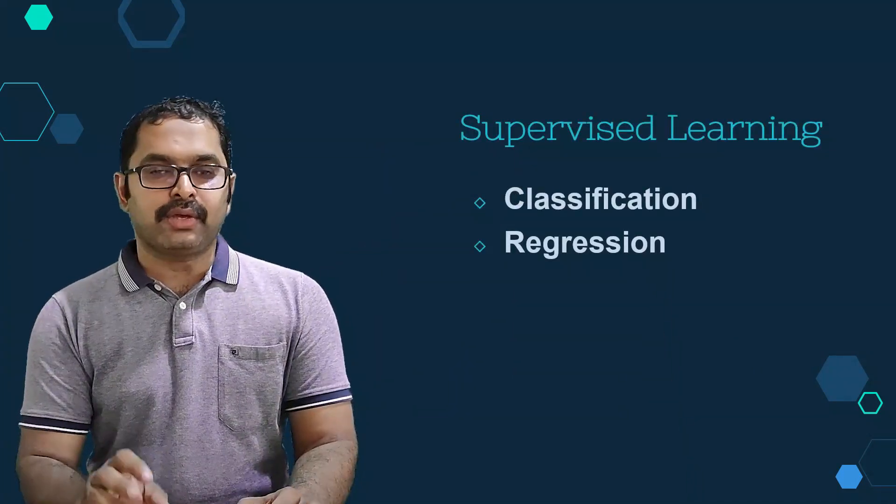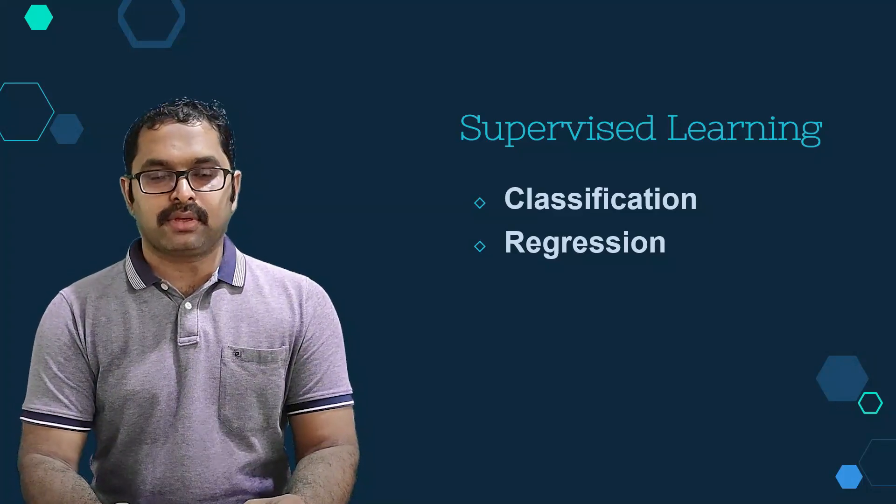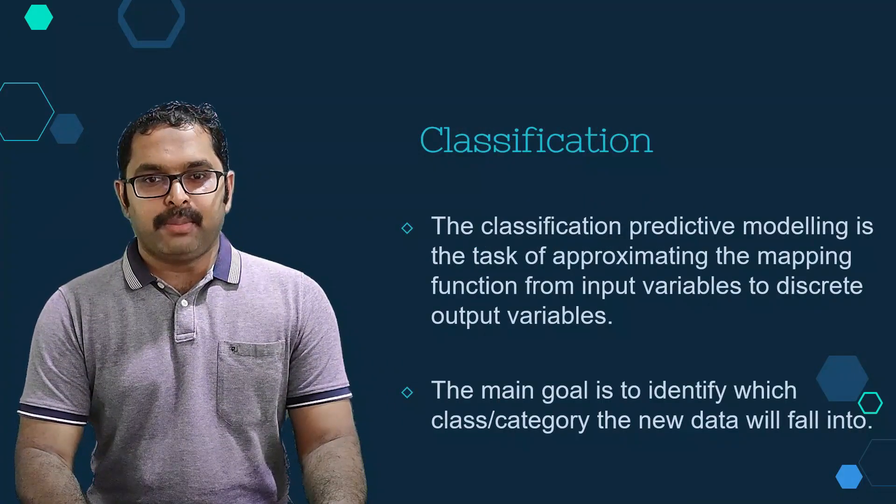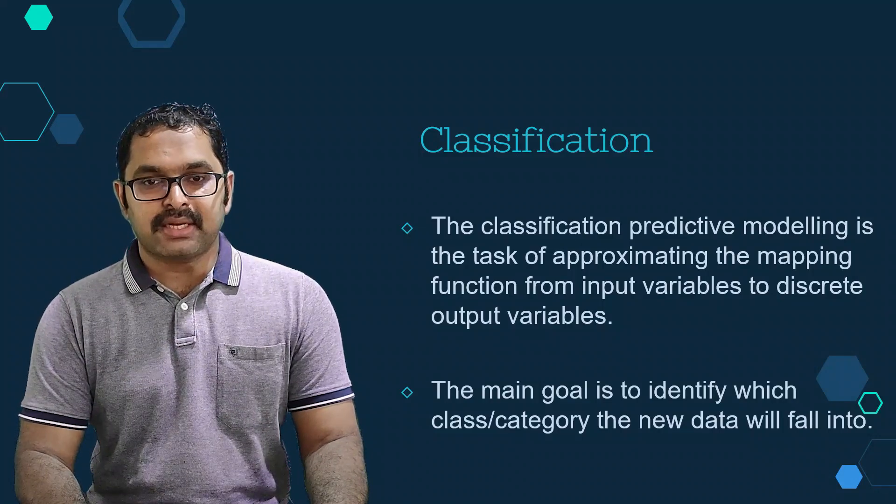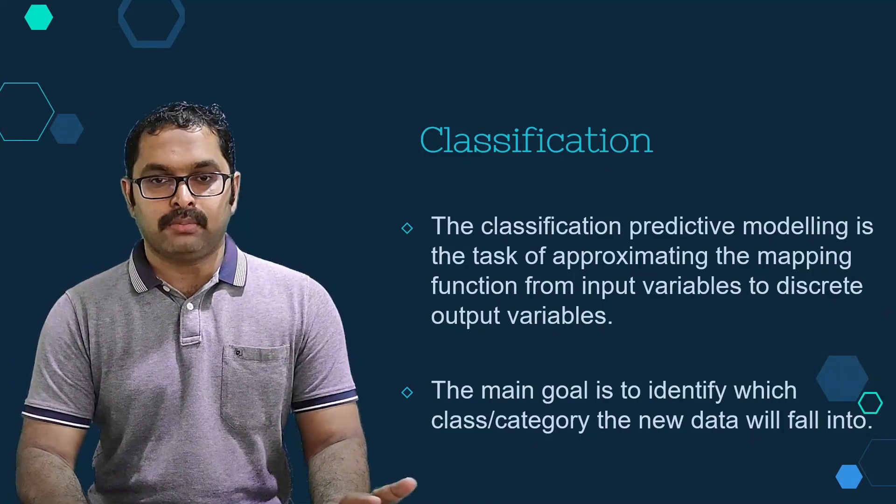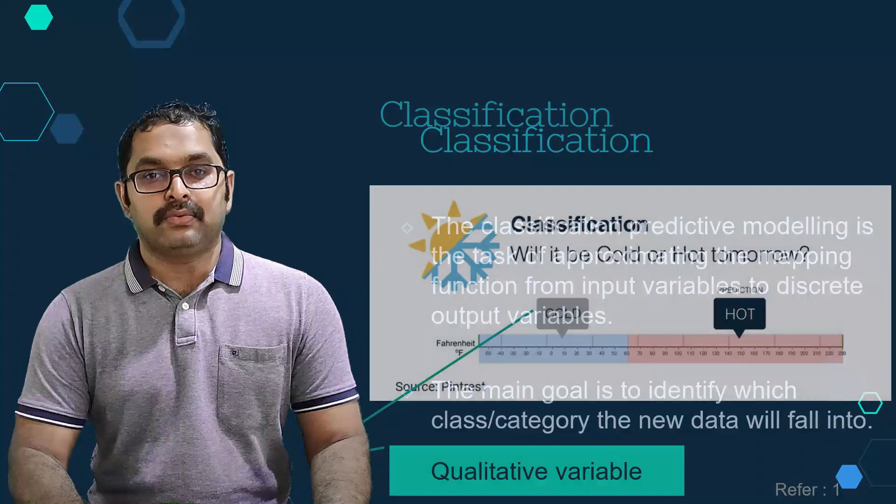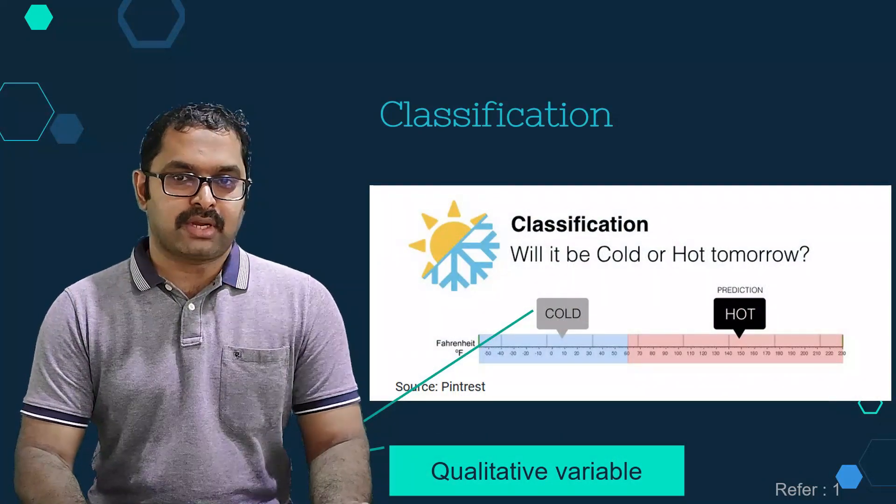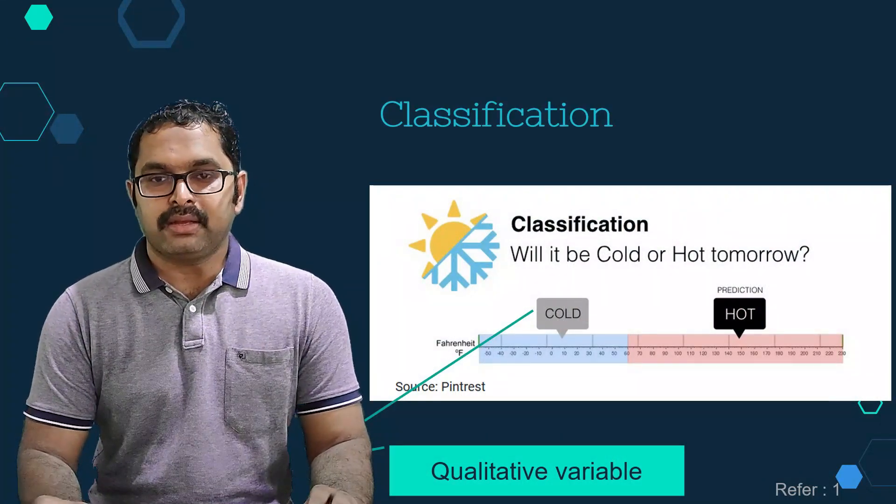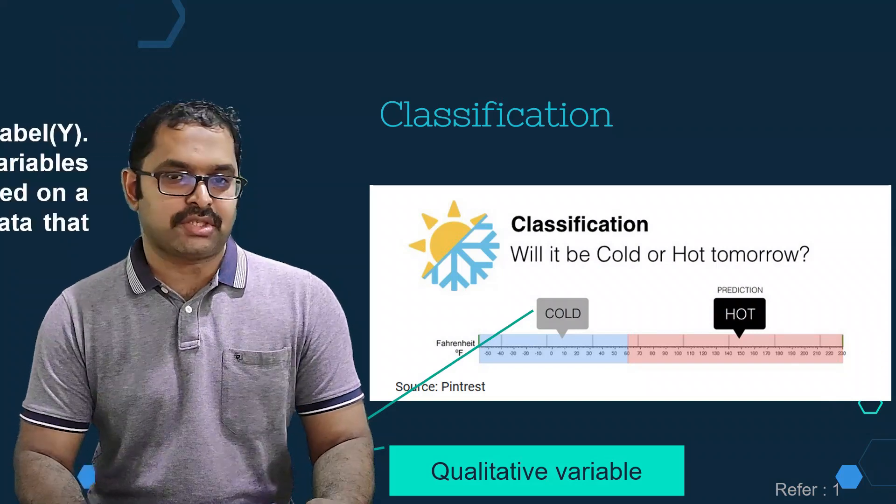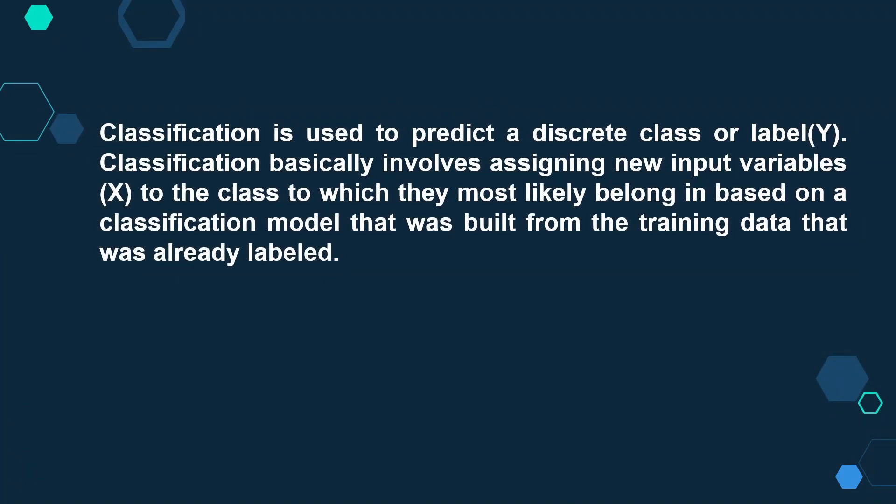We can distinguish two categories of supervised learning: classification and regression. If the output variable belongs to a category type such as red, blue or green, and fail or pass, etc., then such kind of learning or model is called classification. Classification is a predictive model that approximates a mapping function from input variable to identify discrete output variables that can be labels or categories.